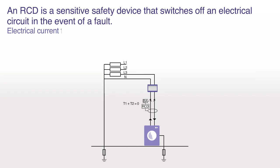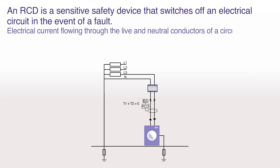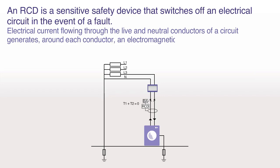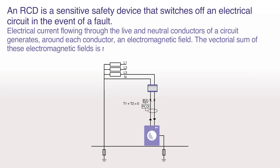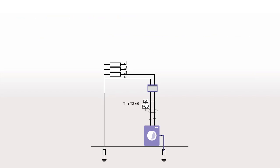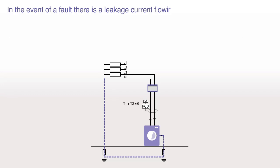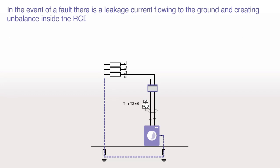Electrical current flowing through the live and neutral conductors of a circuit generates around each conductor an electromagnetic field. The vectorial sum of these electromagnetic fields is normally close to zero. In the event of a fault, there is a leakage current flowing to the ground and creating unbalance inside the RCD.